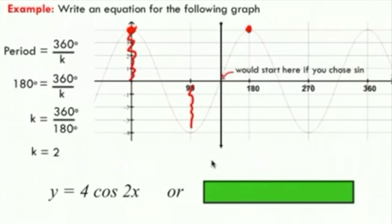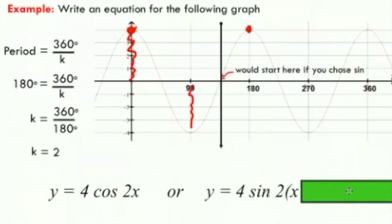Our K value would also be two, but in order to make this a sine graph, you can see that we'd have to shift over to the right by 135 degrees. That would be this point right here in between 90 and 180 degrees.